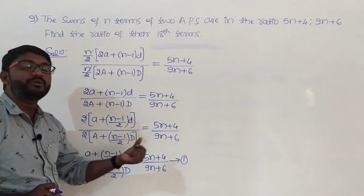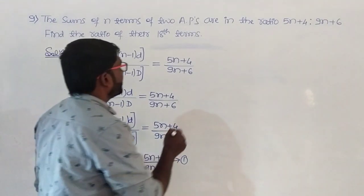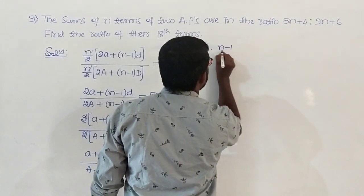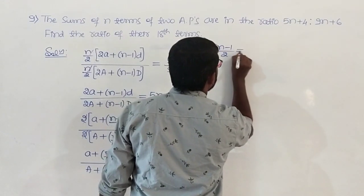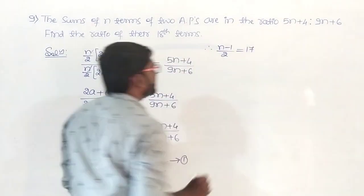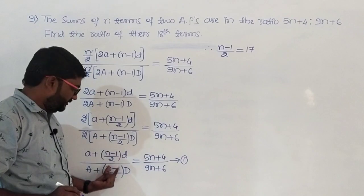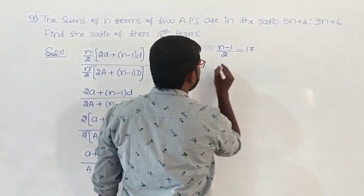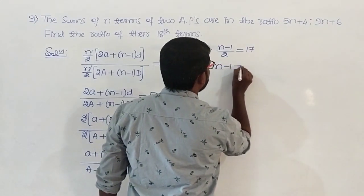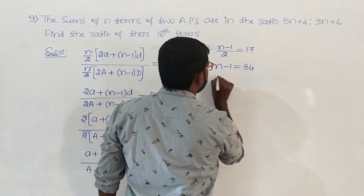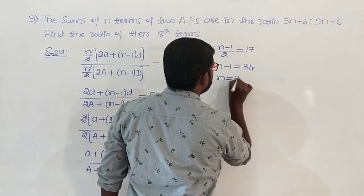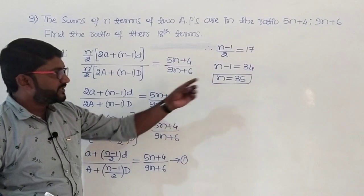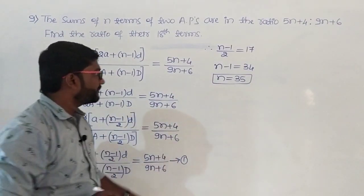Setting n minus 1 by 2 equal to 17, we get n minus 1 equal to 34, therefore n equals 35. We have got the value of n. Now substitute n equal to 35 in equation number 1.